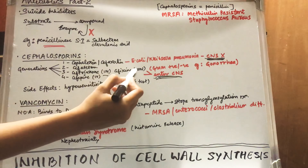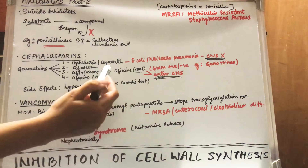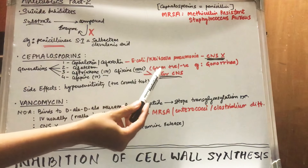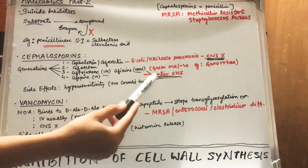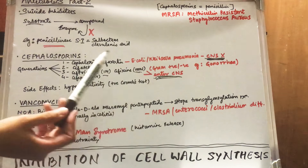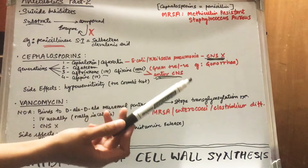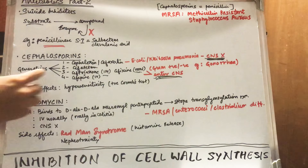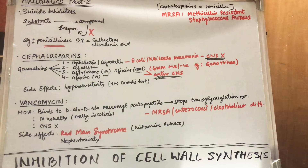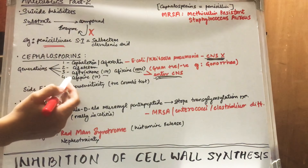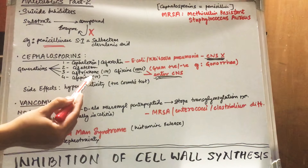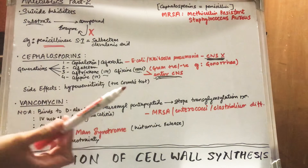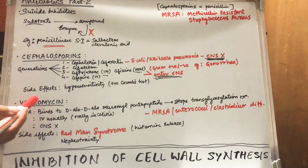Cefixime is given orally and is used against both gram-positive and gram-negative bacteria. For example, in the case of gonorrhea you give ceftriaxone intramuscularly. The fourth generation drug is cefepime, which is given intravenously.